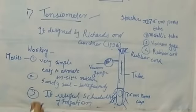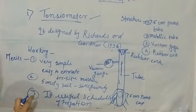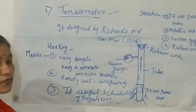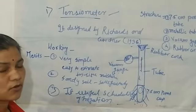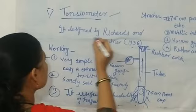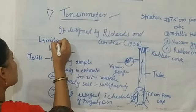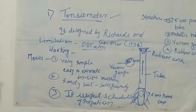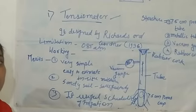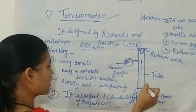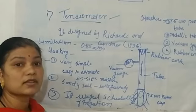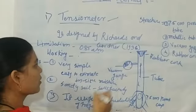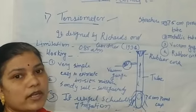The limitations of the tensiometer: it works satisfactorily only up to 0.85 atmospheric tension. When the tension increases beyond 0.85 atmospheres, air enters the vacuum gauge and the system no longer gives accurate readings for a longer period.